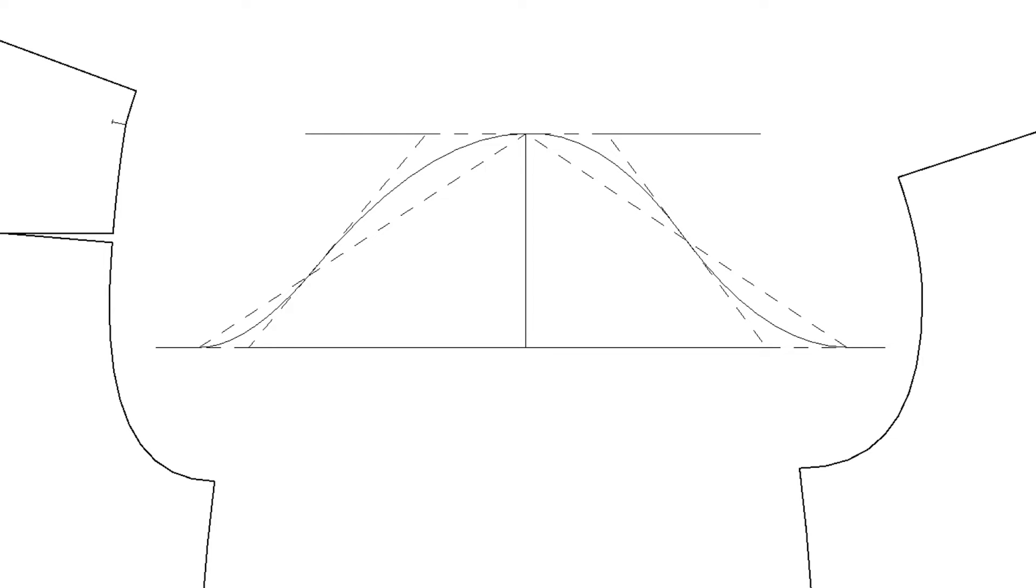Make a notch on the back body first and measure the length from the underarm point. Then make a notch on the sleeve with the same length. I made them double notches because they are the back notches. Make a notch on the front body and measure the length from the underarm point. Then make a notch on the sleeve, same length.